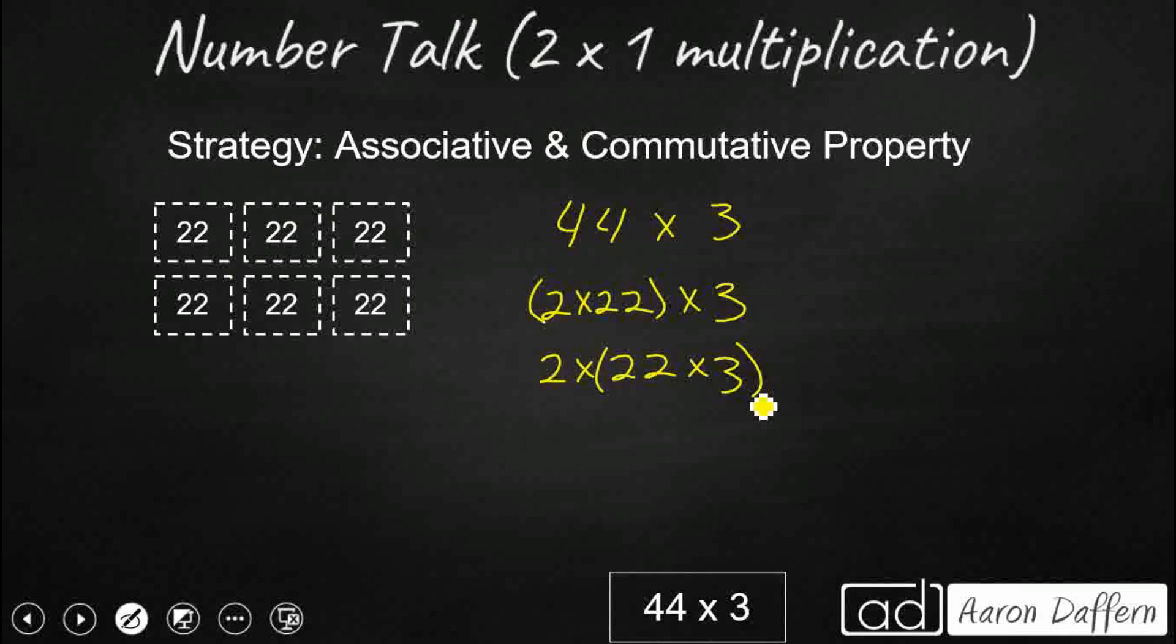Now I want two groups of 22 groups of 3. I do not want 22 groups of 3. That's why I wrote commutative property. The commutative property is the order property, and it lets me switch the order. So I can do 2 times 3 times 22, which is the same as 22 times 3. I've got two groups, my two rows. And I've got three columns of 22 each. That's really 66 and 66, and that's going to get me my 132.